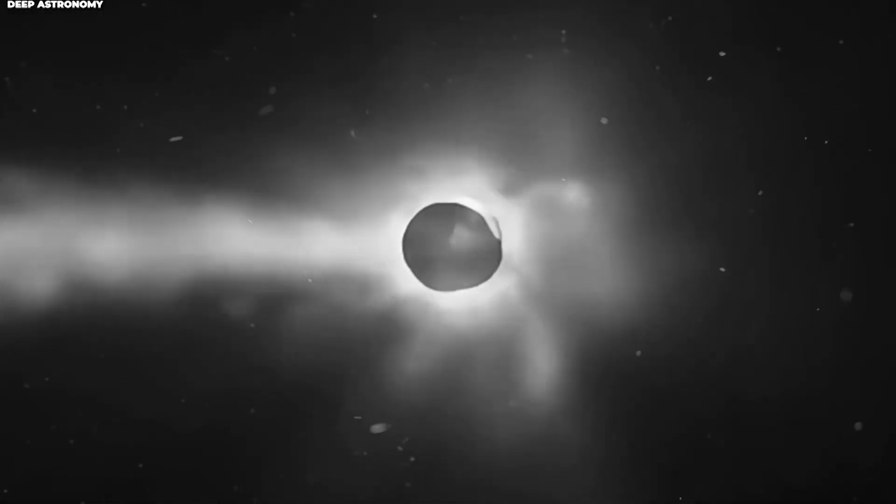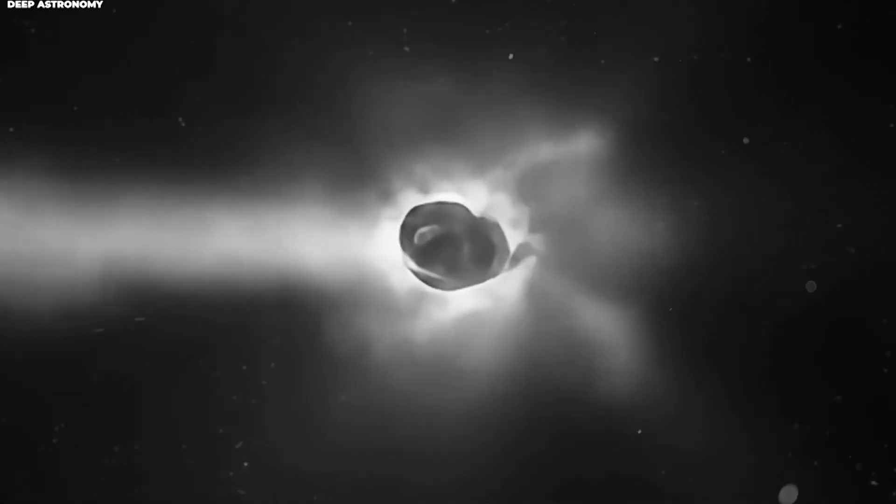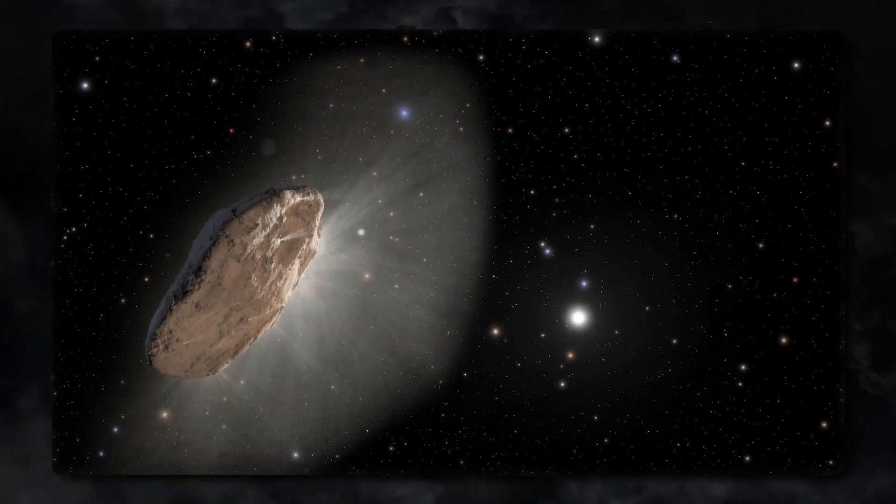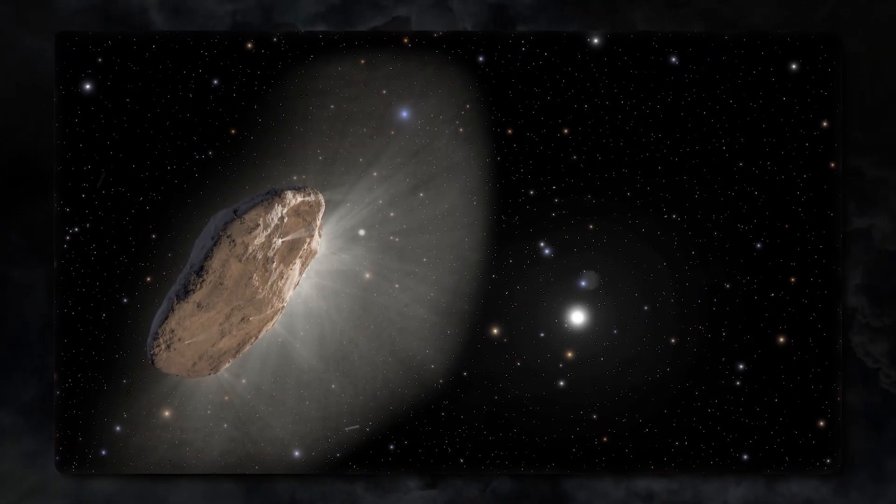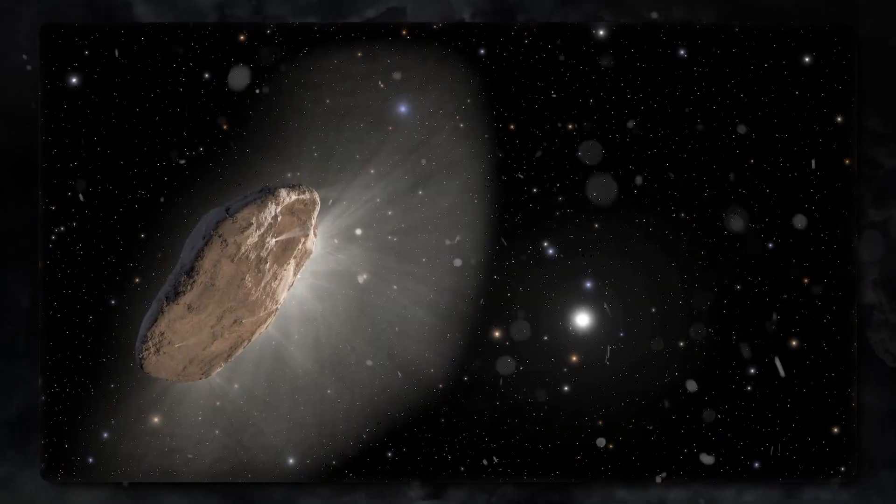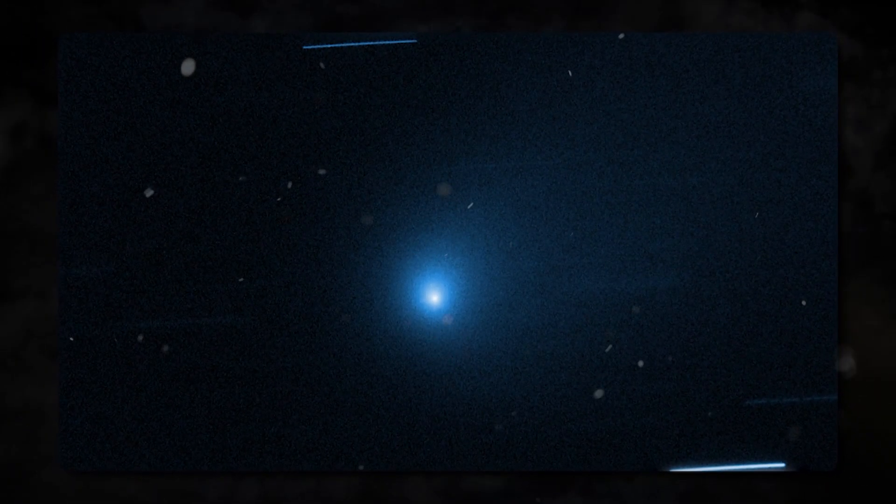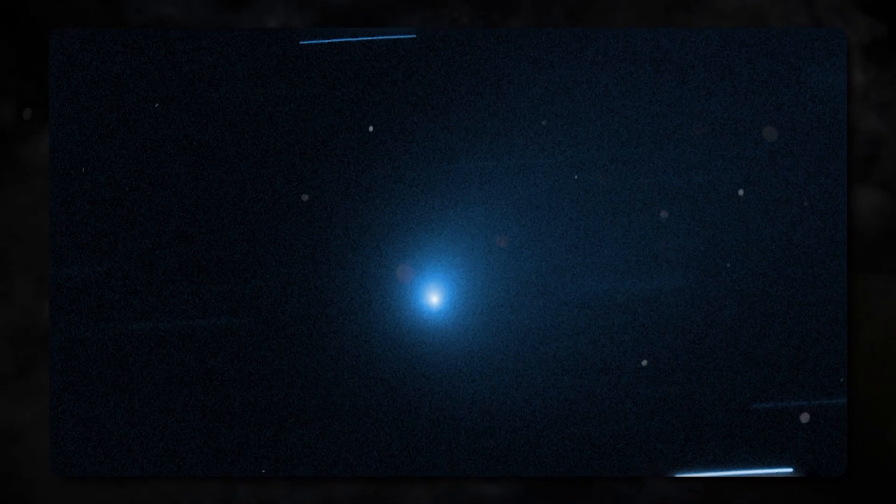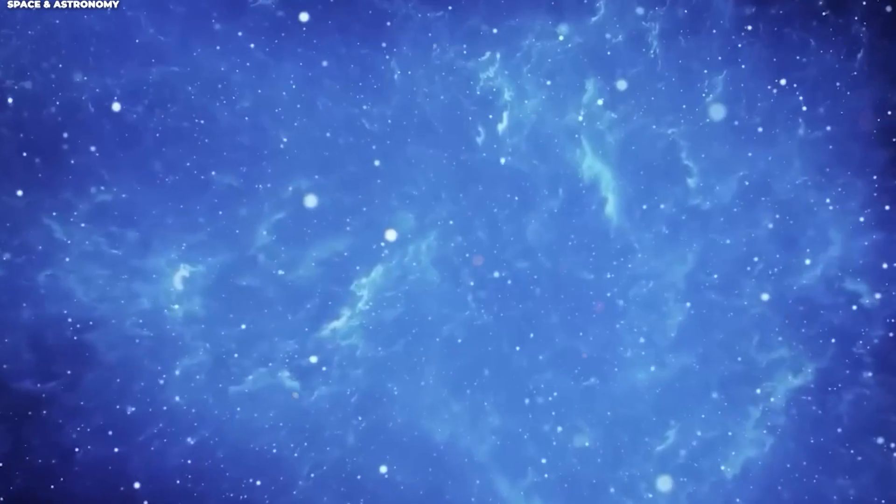Discovery number one: The fragmentation event. In March 2020, astronomers using Hubble noticed something extraordinary. Comet 2I/Borisov began to break apart. The nucleus, the solid core of the comet, started fragmenting.